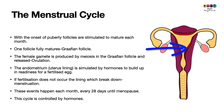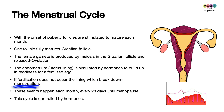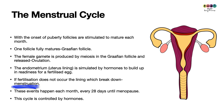During this time, the endometrium — the lining of the uterus — is stimulated by hormones to build up or thicken in readiness to receive a possible fertilized egg. If fertilization does not take place, the endometrium will eventually break down, and this is known as menstruation. These events happen every month on approximately a 28-day cycle until the woman reaches menopause.